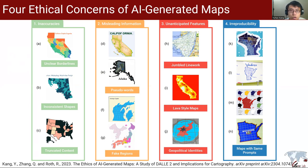The first issue refers to inaccuracy. AI-generated maps may have unclear and distorted borderlines between different regions. The shapes of places may also be inconsistent, and DALL-E 2 may generate truncated content due to the fixed square aspect ratio. AI-generated maps can also produce misleading information, such as pseudo-words, symbols, or characters.